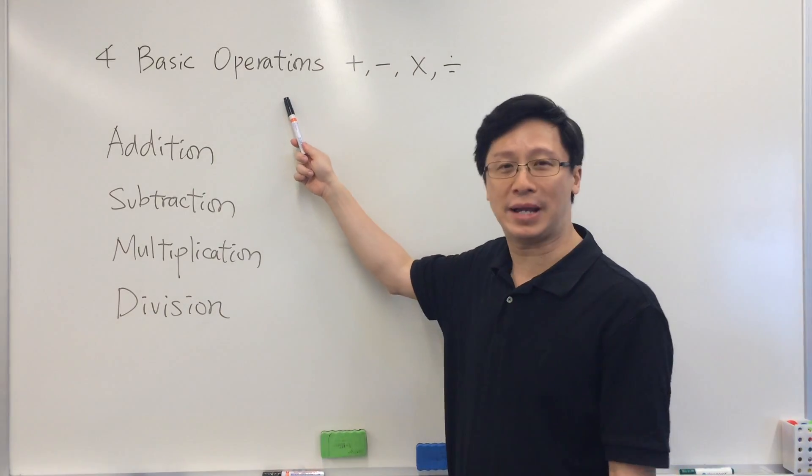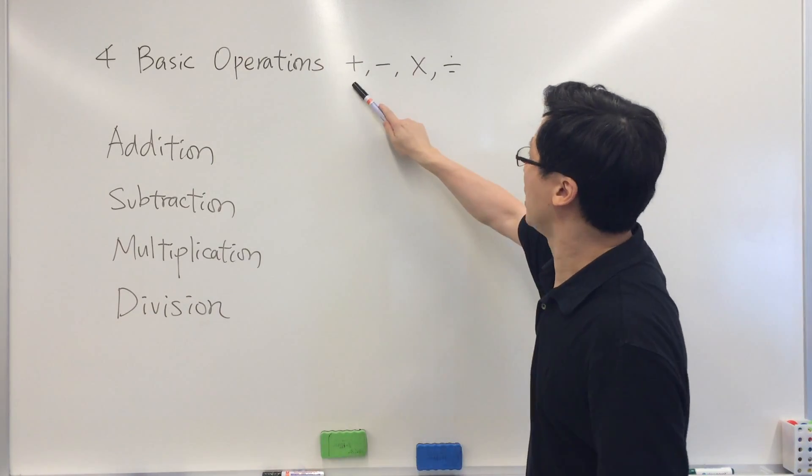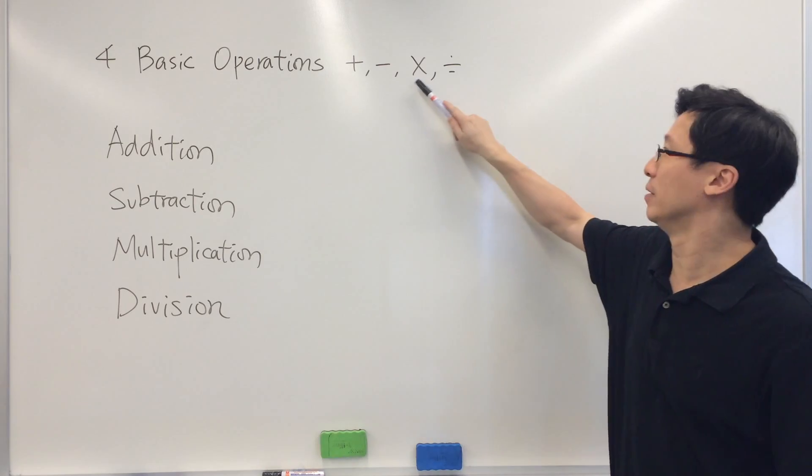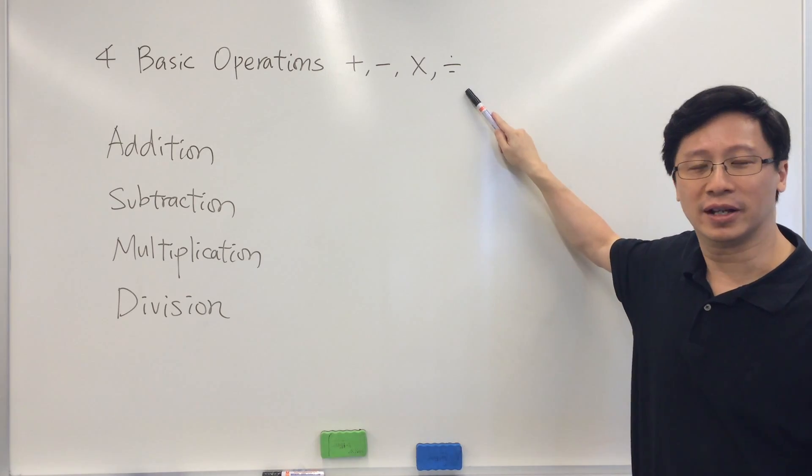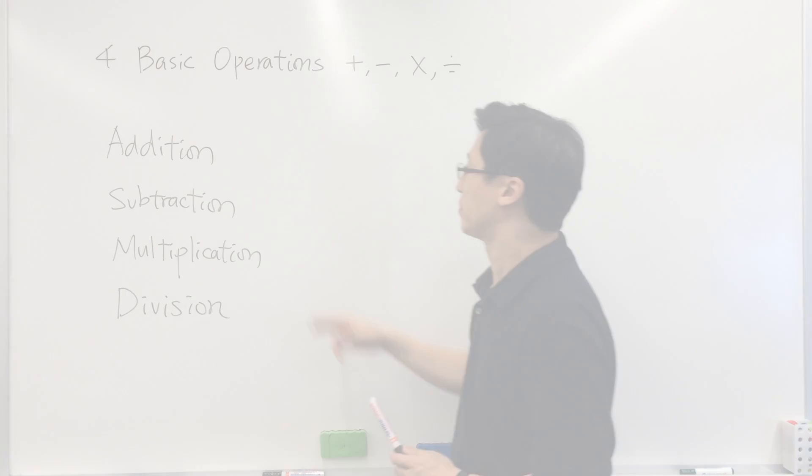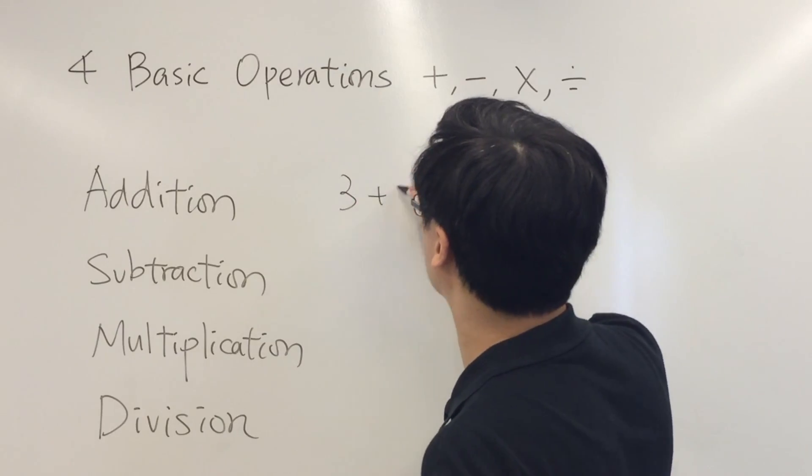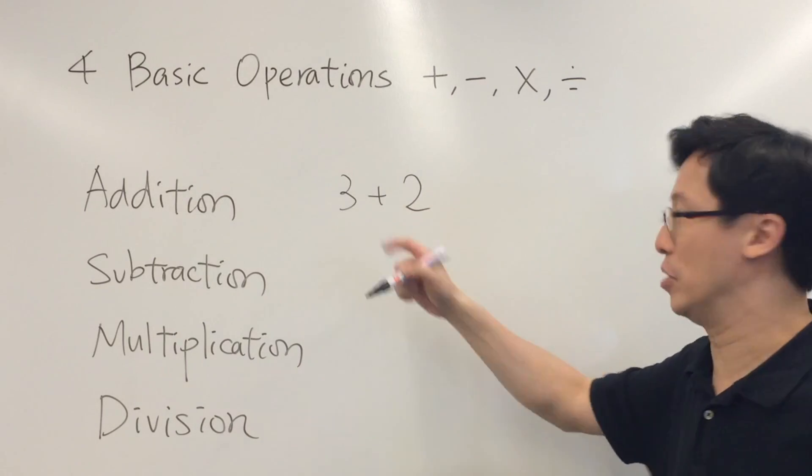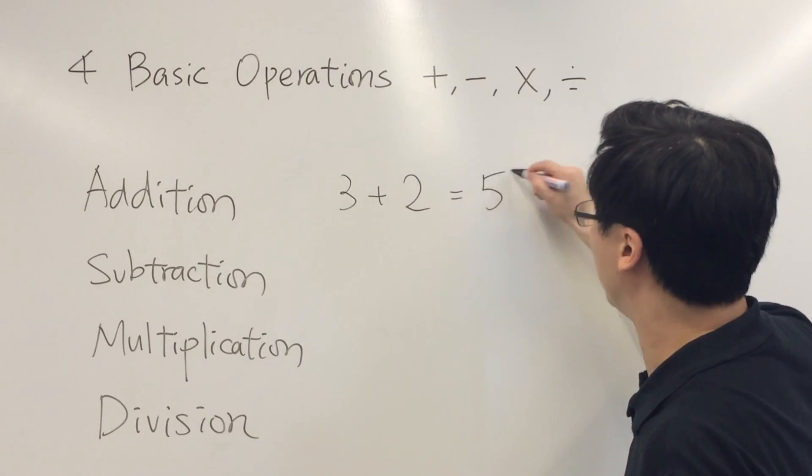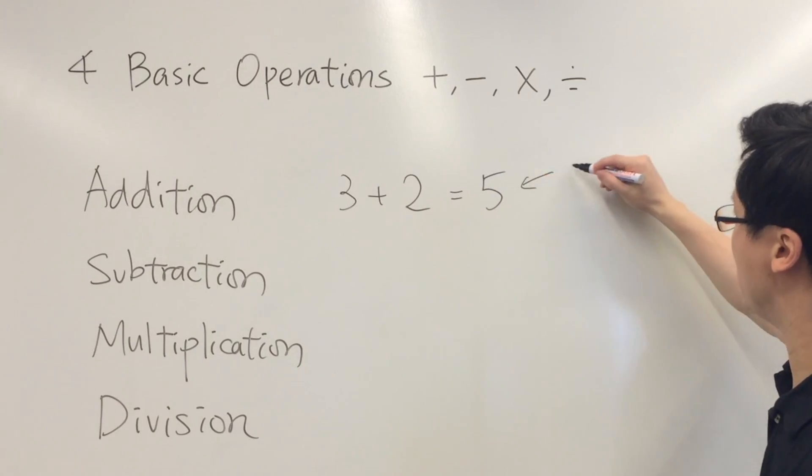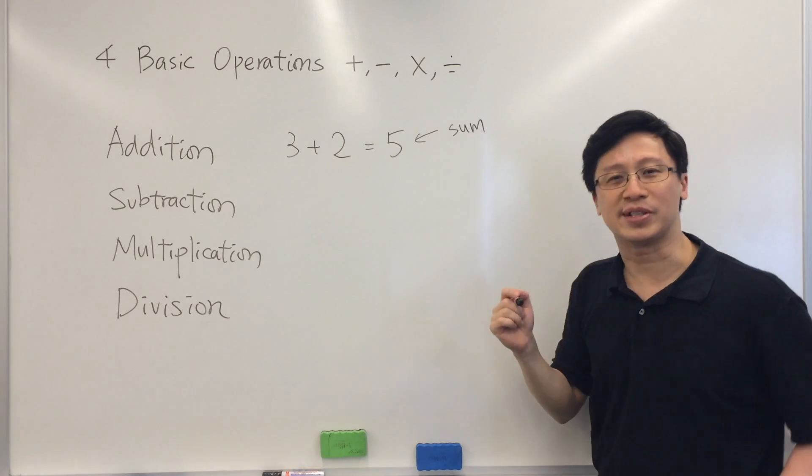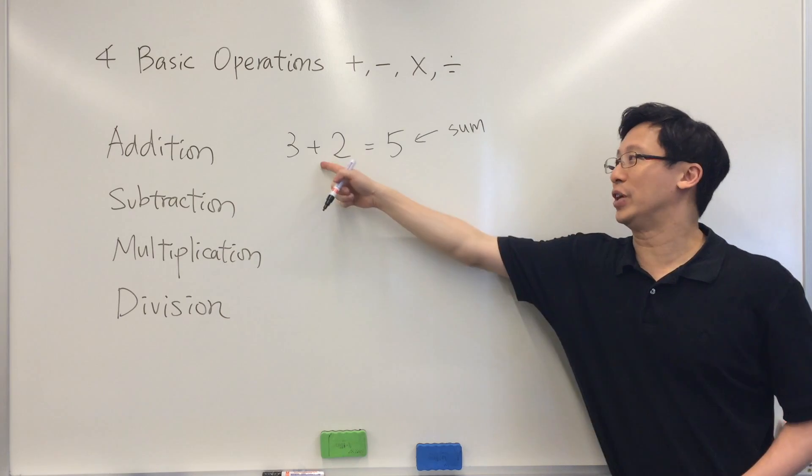Okay, the four basic operations: addition, subtraction, multiplication, and finally division. Let's take an example: 3 plus 2. This is what we call an addition, gives 5, and we call this number the sum of the addition.